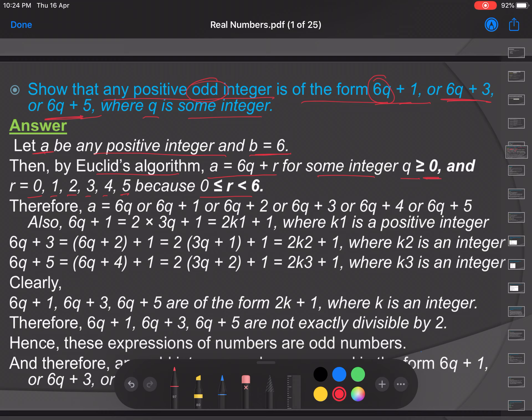Therefore the possible values of a: when we put r equals 0 we get a equals 6q. When we put r equals 1 we get a equals 6q plus 1. Similarly a can be 6q plus 2, 6q plus 3, 6q plus 4, and 6q plus 5.